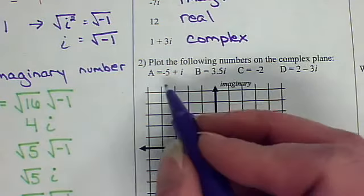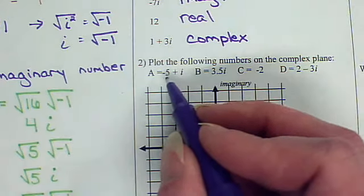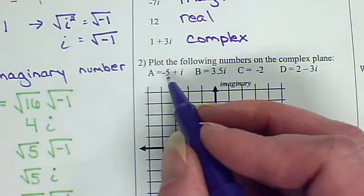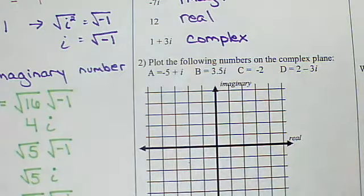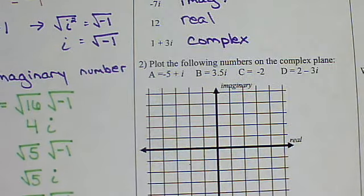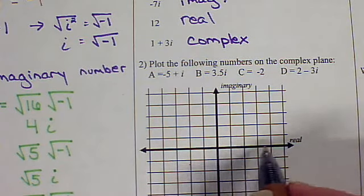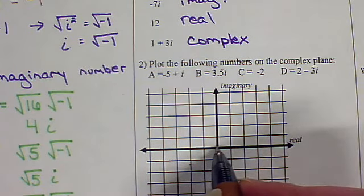So, negative 5 plus i. It's going to be negative 5 parts into the real world plus only one part into the imaginary world. So let's look at where that would be. Negative 5 into the real world. So we start at the origin. Reals are going left and right. So negative 5 would be a left move.